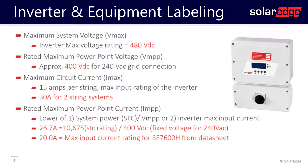The VMAX for a SolarEdge inverter can be found on the spec sheet. For this inverter here, the 7.6 kW HD Wave, the VMAX is listed as 480 volts DC. The VMP is also listed on the spec sheet as 400 volts DC.